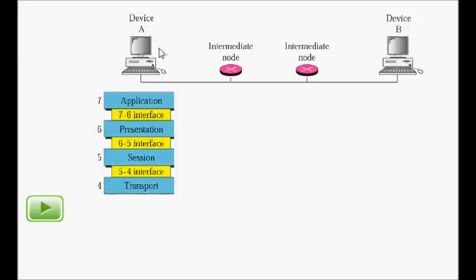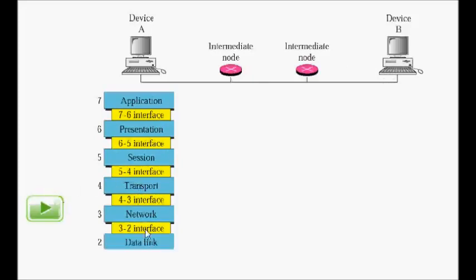Then we have the network layer. Each device has an IP address, and the network layer handles how they communicate. Next is the data link layer, which takes care of hop-by-hop communication. And then there is the physical layer.